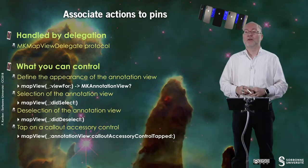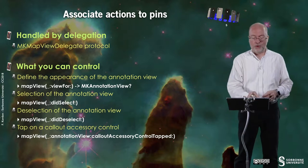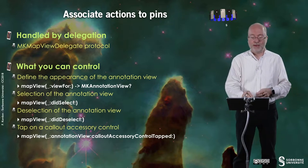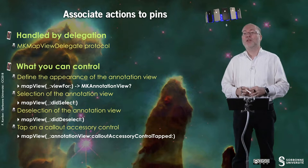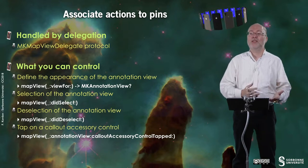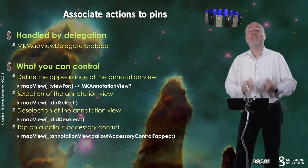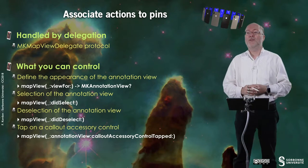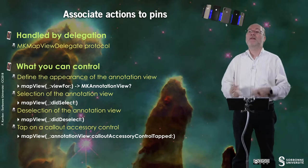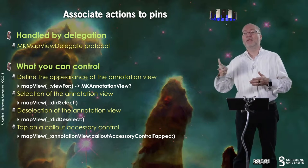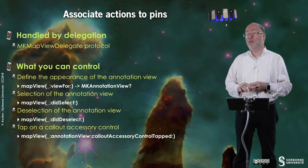It's nice to associate actions to pins, handled by the MKMapViewDelegate protocol. These are extra functions. First, you can define the appearance of the annotation view, and especially of the callout associated to it, by returning such a view. You can be notified when there is a selection of the annotation view, and you are also invoked when this annotation view is deselected, so you can do some actions at that moment. You can also be informed when there is a tap on the accessory control part — you know, that little eye to the right of the callout.